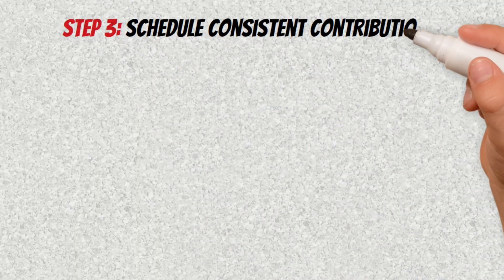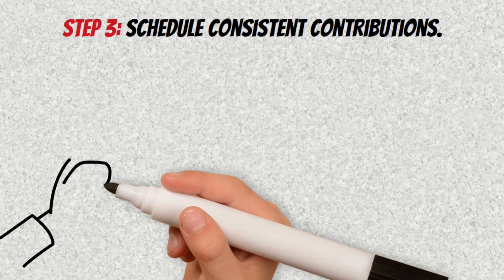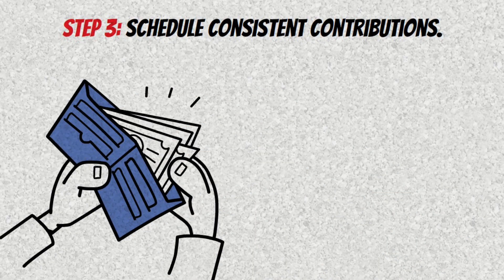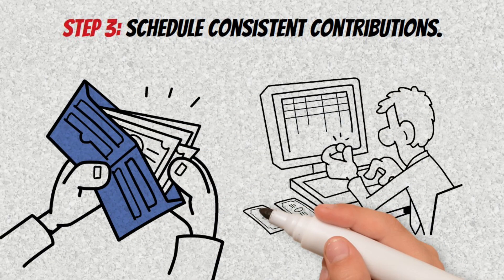Step 3: Schedule consistent contributions. Decide on a fixed amount to invest every month without fail. If possible, automate the process so you don't rely on daily willpower.